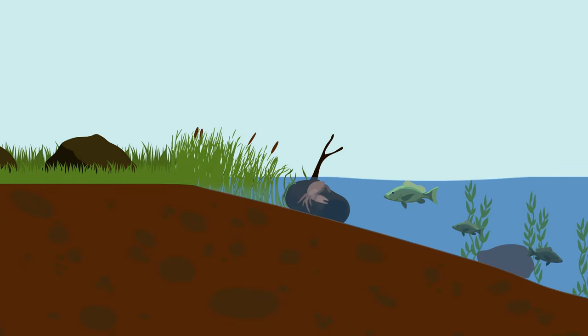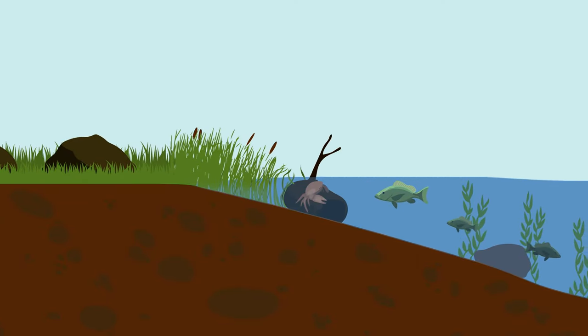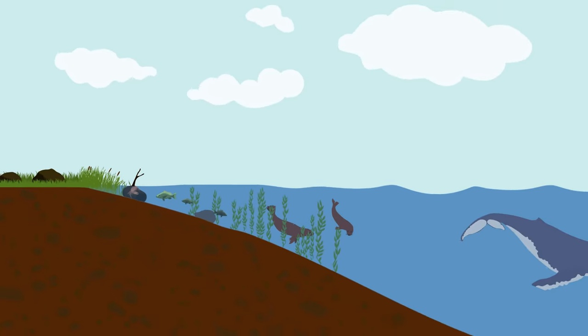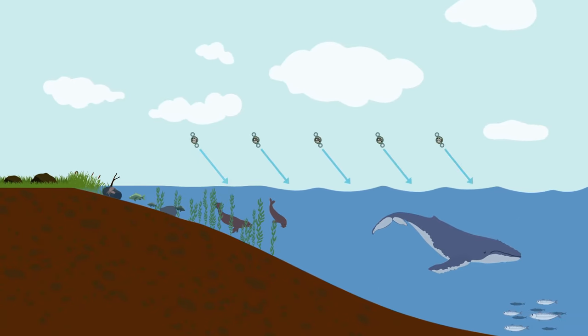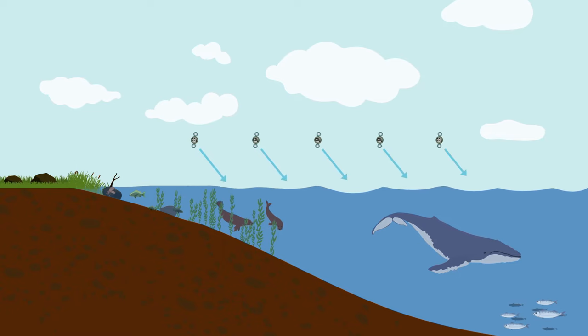Most carbon is stored in rocks and sediments, while the rest is stored in the ocean, atmosphere, and living organisms. These are the reservoirs or sinks through which carbon cycles.